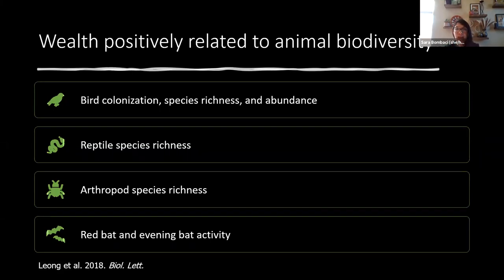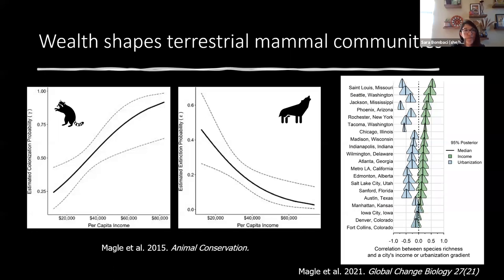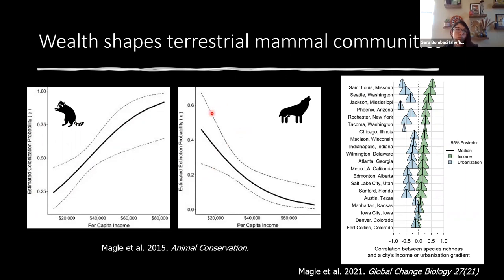These vegetative patterns shape animal biodiversity. Wealthy neighborhoods have higher bird colonization rates, higher bird species richness and abundance, higher reptile species richness, higher arthropod species richness, and for some bat species higher activity patterns. Recent work by collaborator Seth Negley and colleagues found that coyotes and raccoons in Chicago were more likely to colonize and persist in wealthier neighborhoods — the probability of raccoon colonization increases as per capita income increases, while the probability that a coyote would leave a site decreases as per capita income increases.